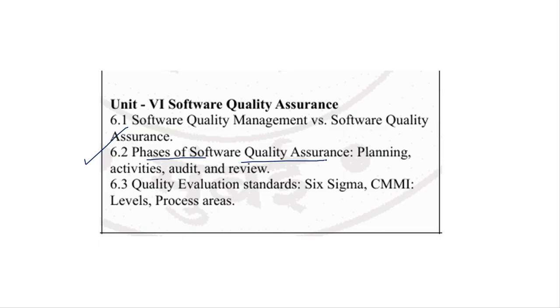So basically, there are 4 phases: Planning, Activities, Audit, and Review. Now we are going to discuss these 4 phases of Software Quality Assurance.